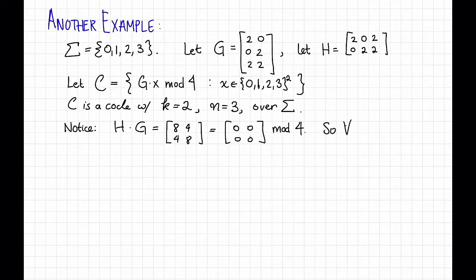That means that H is a legit parity check matrix for C. That is, for all code words C in my code C, H times C is equal to H times G times X for some appropriate message X, which is equal to 0 mod 4.